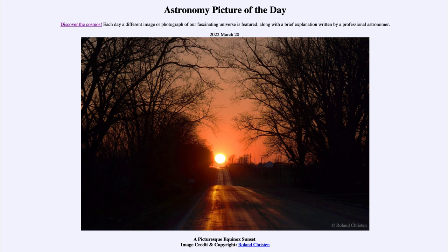The equinox is also the beginning of spring, and it occurs when the sun crosses the celestial equator. The vernal equinox is when the sun crosses from the southern hemisphere of the sky into the northern hemisphere. The days will get longer and longer — we've been noticing increasing daylight since mid-December. The sun will also get higher and higher in the sky; shadows at noon that were very long in December will grow shorter and shorter over the next few months as we head toward the summer solstice, which is about three months from now in June.